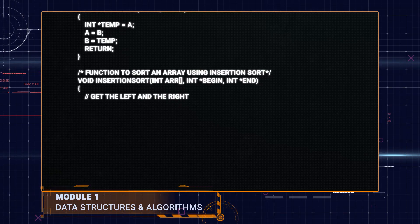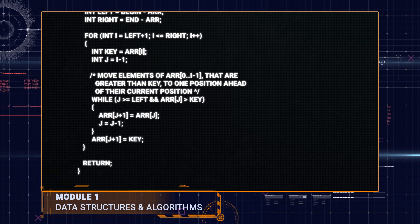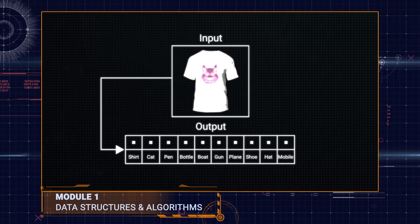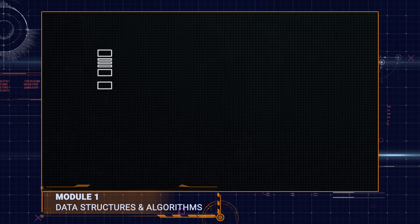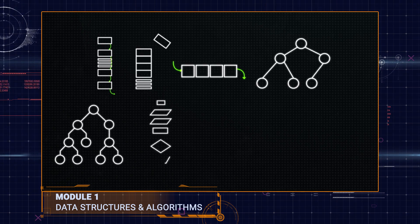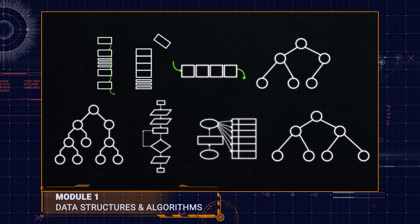In module one, you will learn about data structures and algorithms, and understand how computer vision categorizes images already available to it. You will take a deeper look into lists, stacks, queues, heaps, tries, searching, hashing, and greedy algorithms.